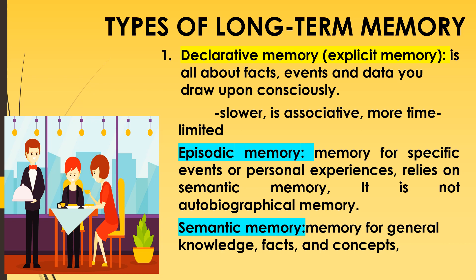The first type is declarative memory, also known as explicit memory. It is about the facts, events, and data you draw up consciously. Explicit memory can be slower because you have to take time to correctly recall a name or a detail. Explicit memory is also associative and can be time-limited — for example, if you go a long time without speaking a language, including your mother tongue, you will probably struggle. This challenge to explicit memory is known as linguistic de-skilling.